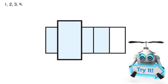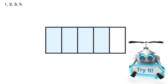One, two, three, four. There are four shaded sections in the box.